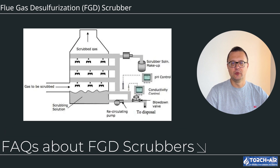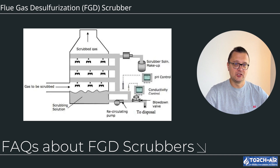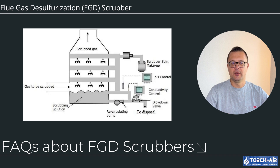FAQs about FGD scrubbers: What is the main difference between wet and dry FGD scrubbers? Wet scrubbers use a liquid to capture and neutralize SO2, whereas dry scrubbers use a solid sorbent. Wet scrubbers generally have higher efficiency, but dry scrubbers are more suited for water-constrained environments. Can FGD scrubbers be used in cold environments? Yes — FGD scrubbers can be designed with heating systems to prevent freezing of the scrubbing liquid, particularly in wet systems. What are the by-products of wet FGD systems? The primary by-product is gypsum (CaSO4·2H2O), which can be used in construction materials like wallboard.